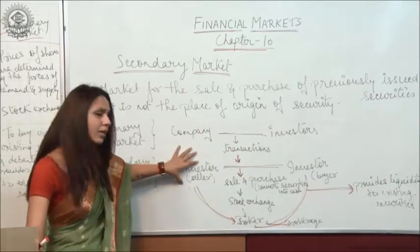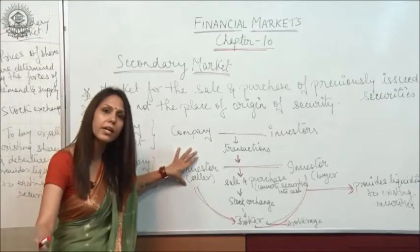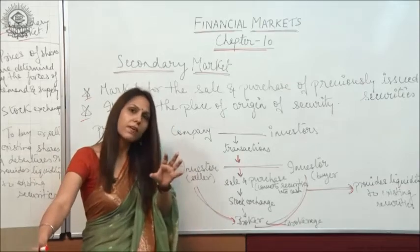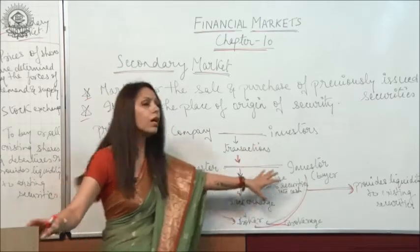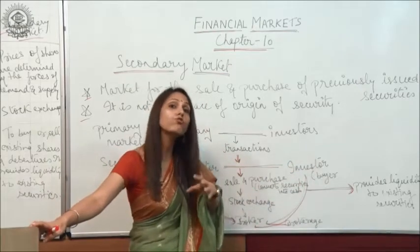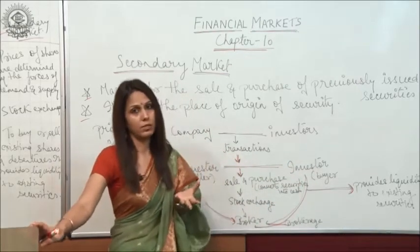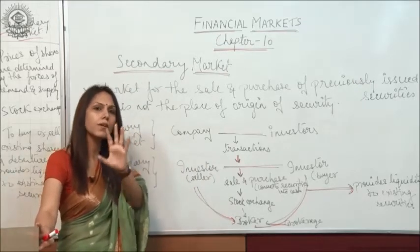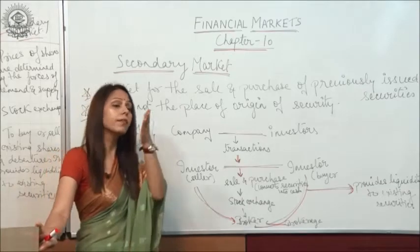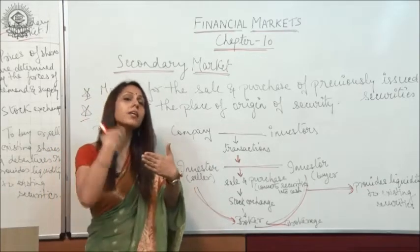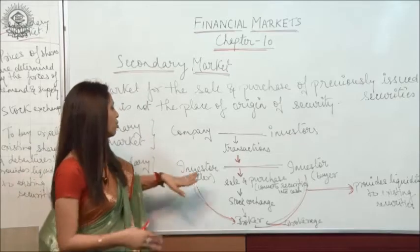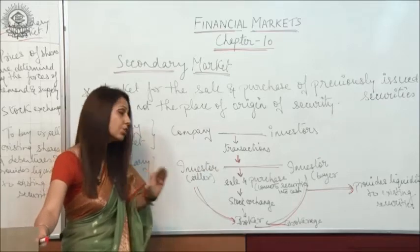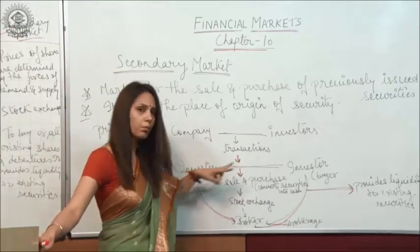One investor who is interested in converting the securities into cash sells the securities to another investor who is willing to buy them. So there is no direct link between the company and the investor; the link is between the investors who are willing to buy and sell their securities, and the transaction takes place between both of them.